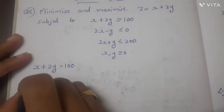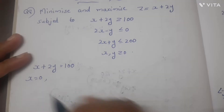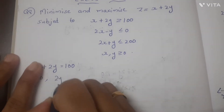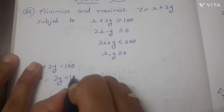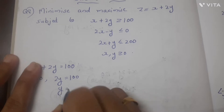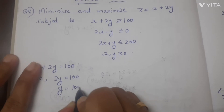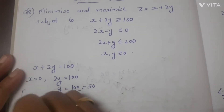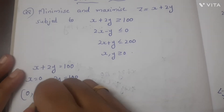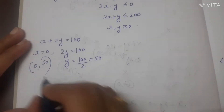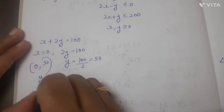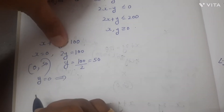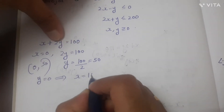We have x equal to 0, then 2y is equal to 100, that means y is equal to 100 divided by 2, so y is 50. We have y equal to 0, then 2x is equal to 100.